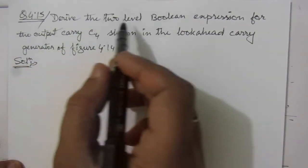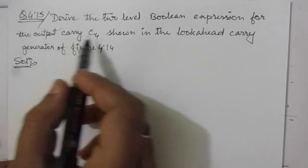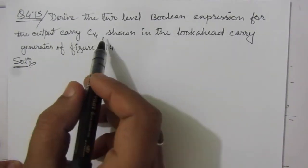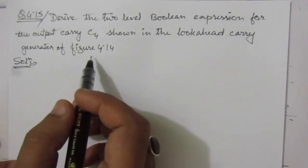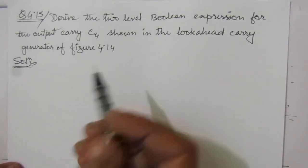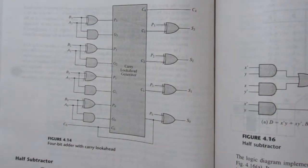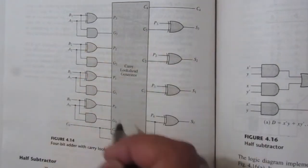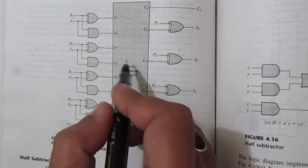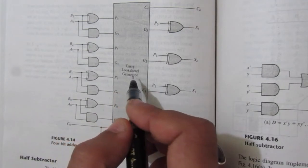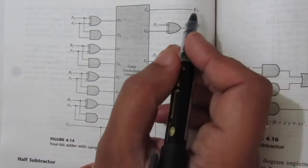The problem is: derive the two-level boolean expression for the output carry C4 shown in the carry look-ahead generator of figure 4.14. Here we can see figure number 4.14, and within this box we have this carry look-ahead generator. For this internal circuit, we have to derive the expression for C4.